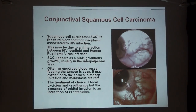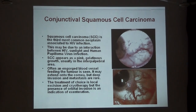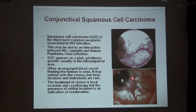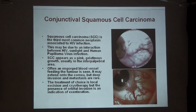Conjunctival squamous cell carcinoma is the third most common neoplasm in HIV infection, after Kaposi's sarcoma and non-Hodgkin's lymphoma. It is thought to result from interaction of the HIV virus with sunlight and human papillomavirus. In the eye, it appears as a pinkish, gelatinous nodule-like structure in the interpalpebral area, with an engorged feeding vessel. Local metastasis is rare. Treatment of choice is excision with cryotherapy of the base, but if it involves the orbit, exenteration is indicated.